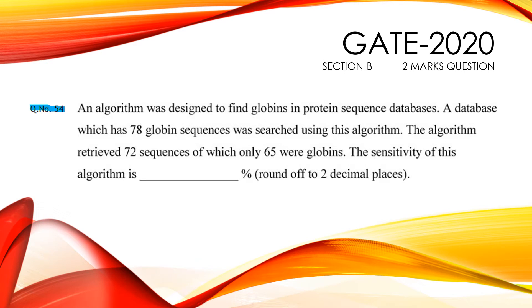An algorithm was designed to find globins in a protein sequence database. A database which has 78 globin sequences was searched using this algorithm. The algorithm retrieved 72 sequences, of which only 65 were globins.